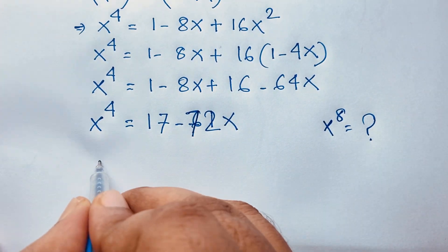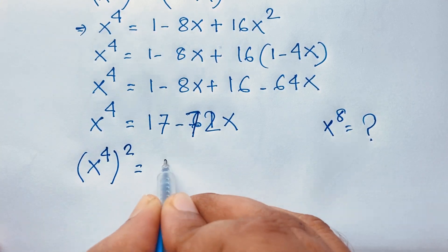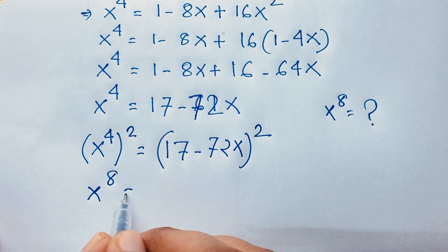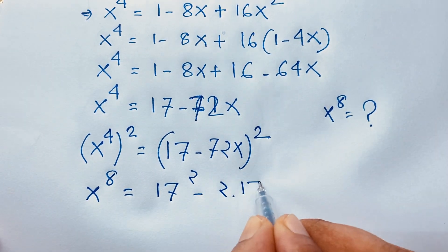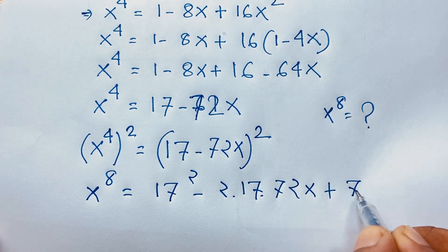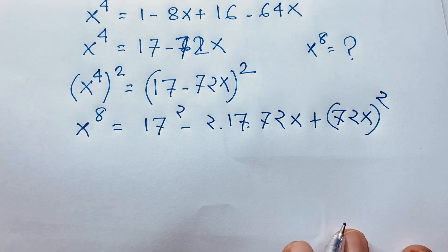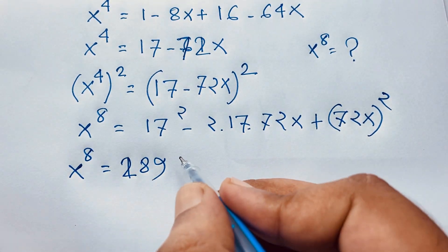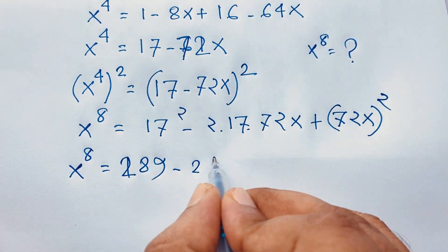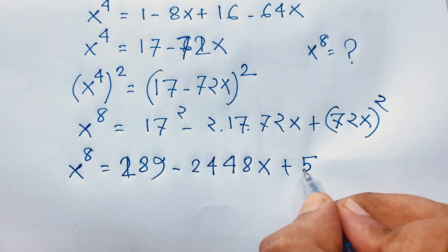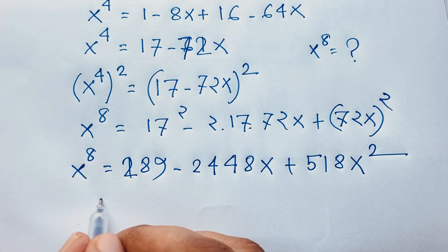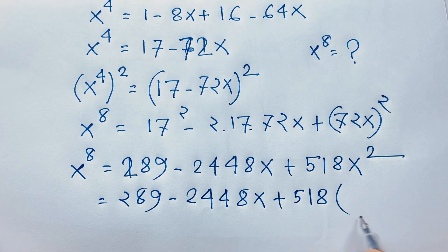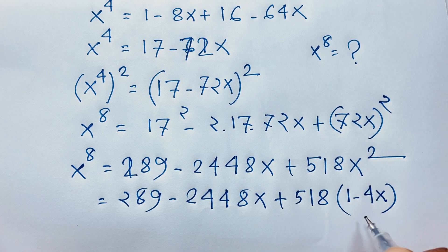Our question requires x^8, but we have x^4. So I square both sides: (x^4)² = (17 − 72x)². Therefore x^8 = 17² − 2×17×72x + 72²x², which gives x^8 = 289 − 2448x + 5184x².